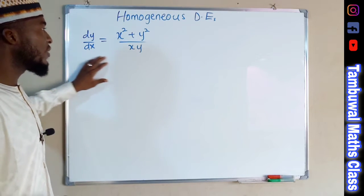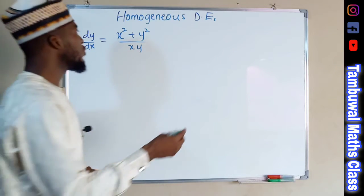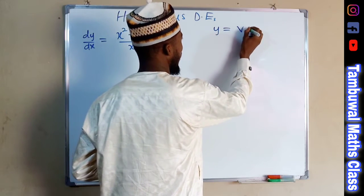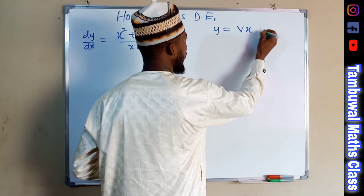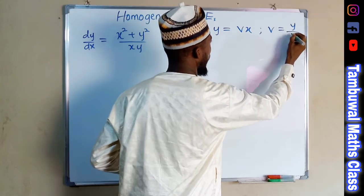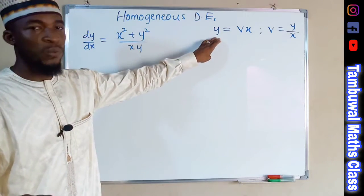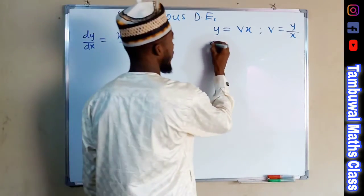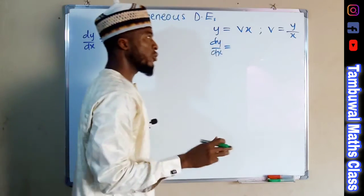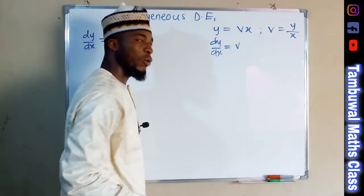Let us now look at this form. This is a homogeneous differential equation in which you cannot separate the variables. We are going to replace y with vx, such that v is equal to y over x. Now we are going to differentiate y with respect to x — dy over dx — using the product rule.